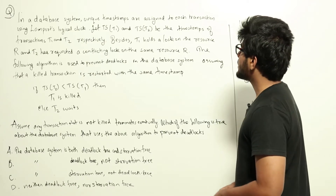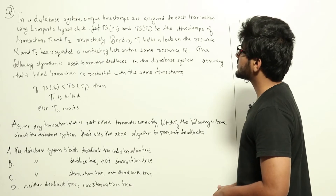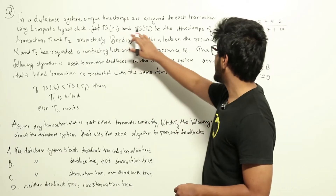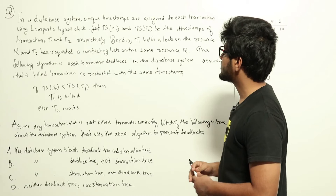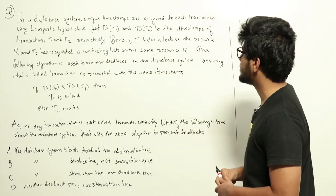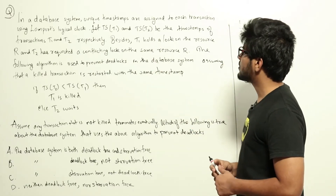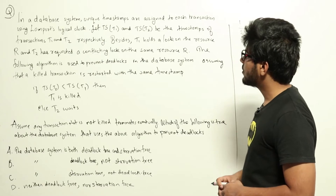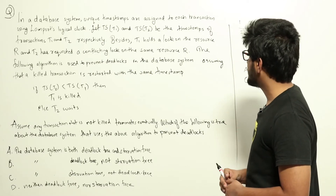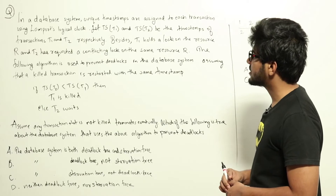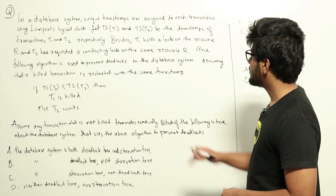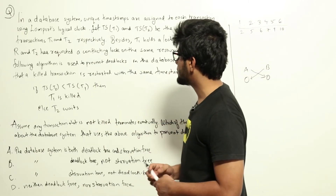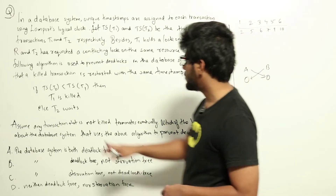In a database system, unique timestamps are assigned to each transaction using Lamport's logical clock. Let timestamp of T1 and timestamp of T2 be the timestamps of transactions T1 and T2 respectively. T1 holds a lock on the resource R and T2 has requested a conflicting lock on the same resource R. The following algorithm is used to prevent deadlocks, assuming a killed transaction is restarted with the same timestamp: if timestamp of T2 is less than timestamp of T1, then T1 is killed; else T2 waits.